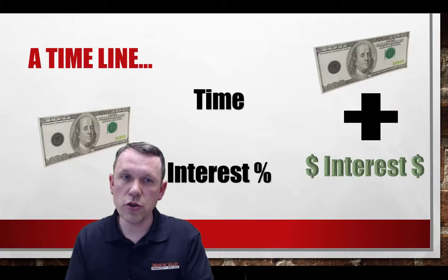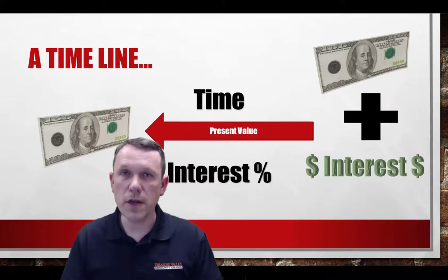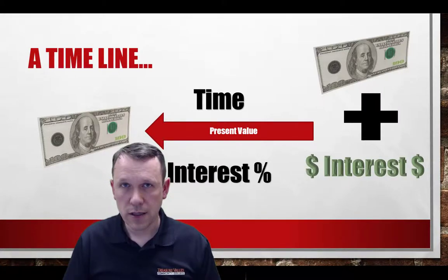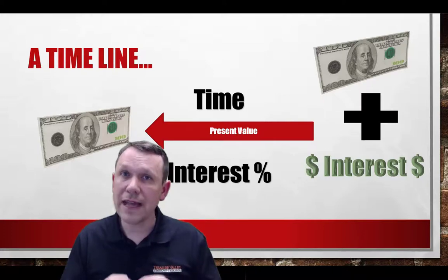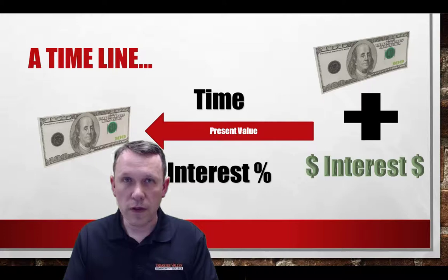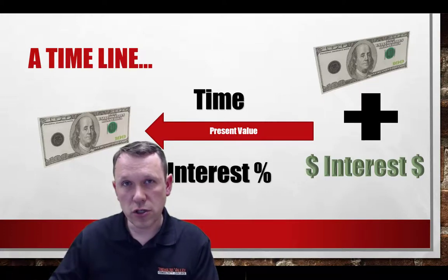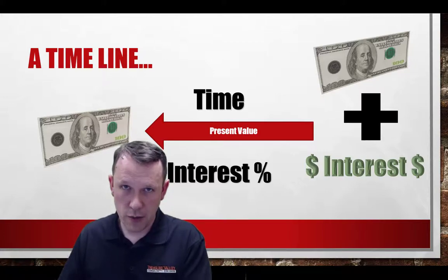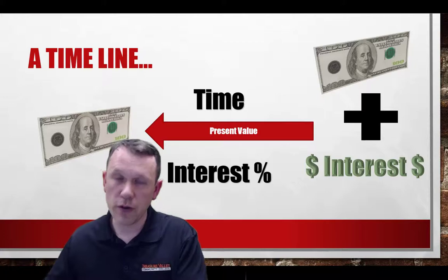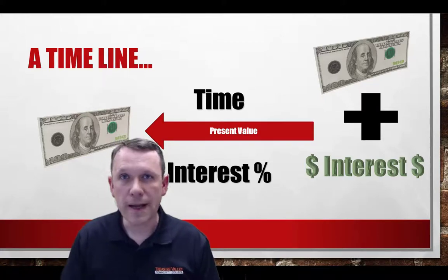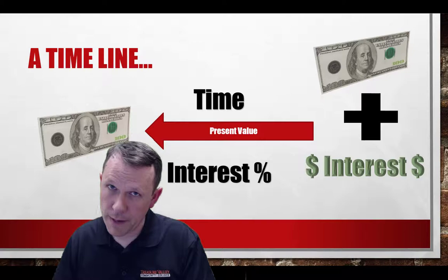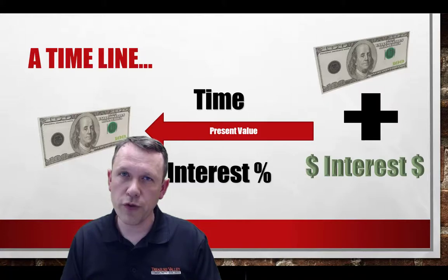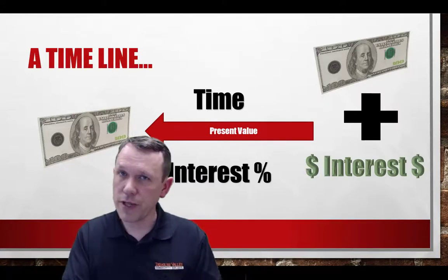We can also do calculations that tell us: if you want a certain amount of money in the future, what do we need to invest today to get that amount? There are calculations looking toward the future — if we invest today at a certain interest rate and wait a certain amount of time, what is our future value? There are also calculations where we can say we want a certain amount in the future — what do we need to invest today? We can look in both directions: future to present and present to future.